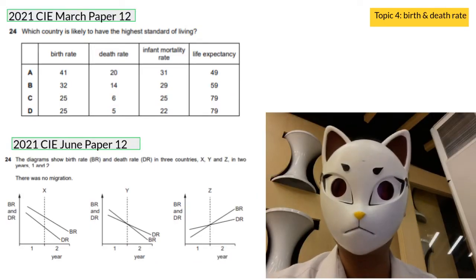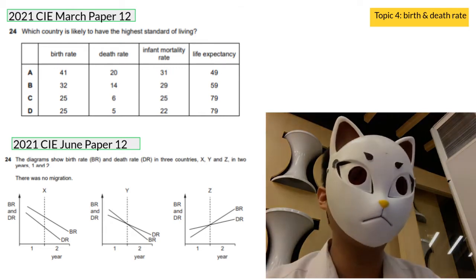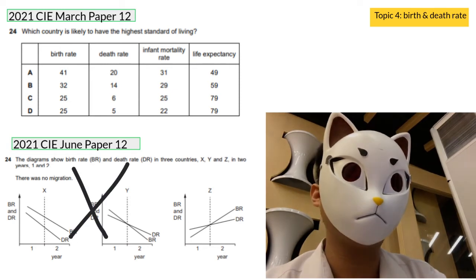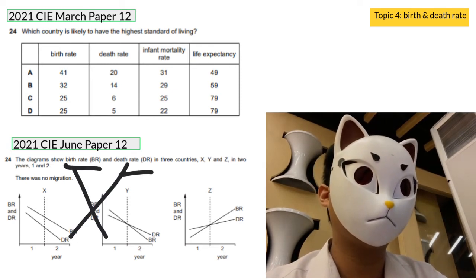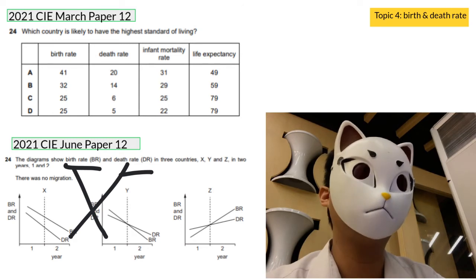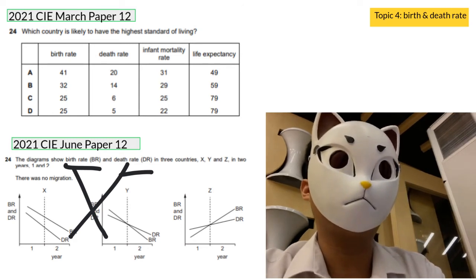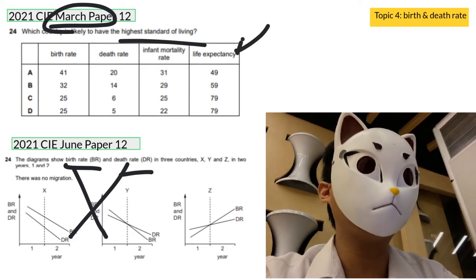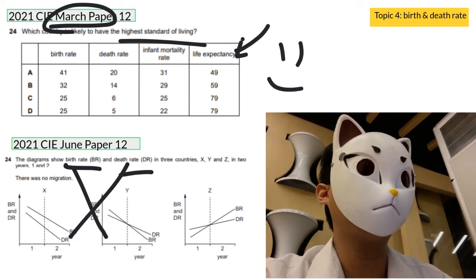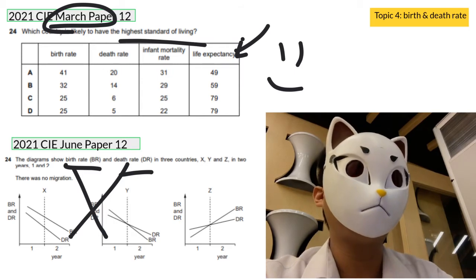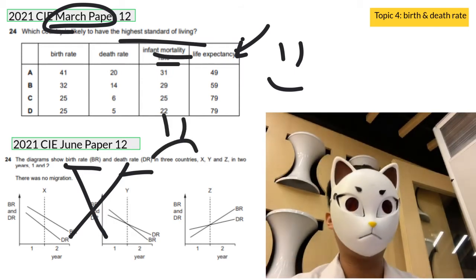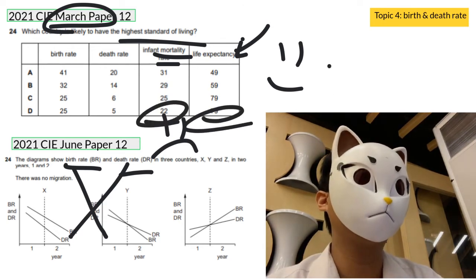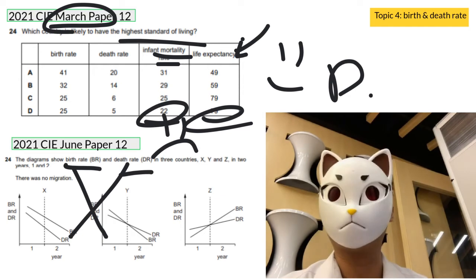This is a new topic about birth rate and death rate. For the question on living standards, the standard of living depends on life expectancy — the higher, the better — and the infant mortality rate, where lower is better. So the answer goes to D. This is a new topic, so make sure you read your textbook carefully.